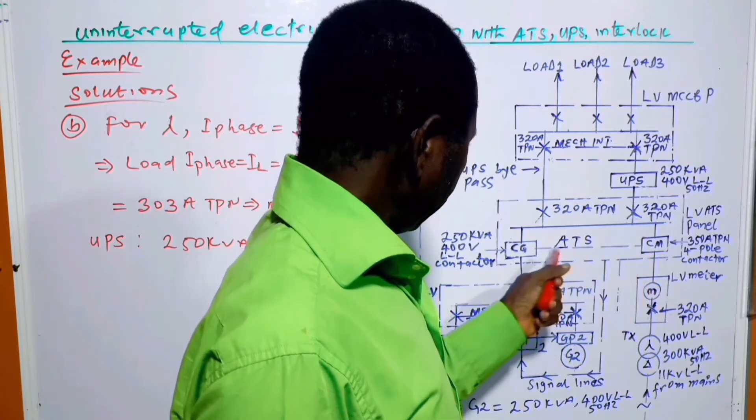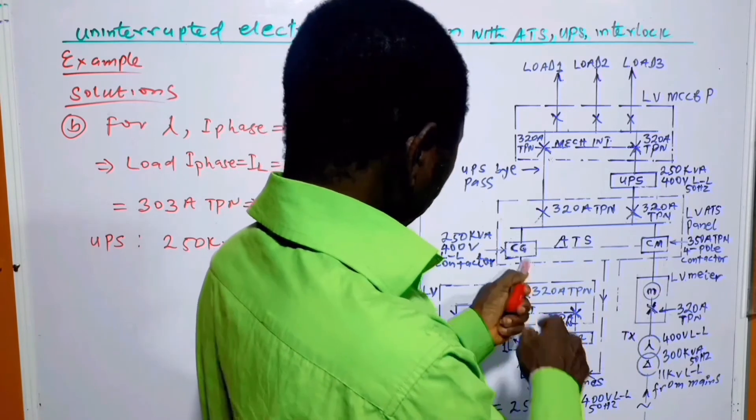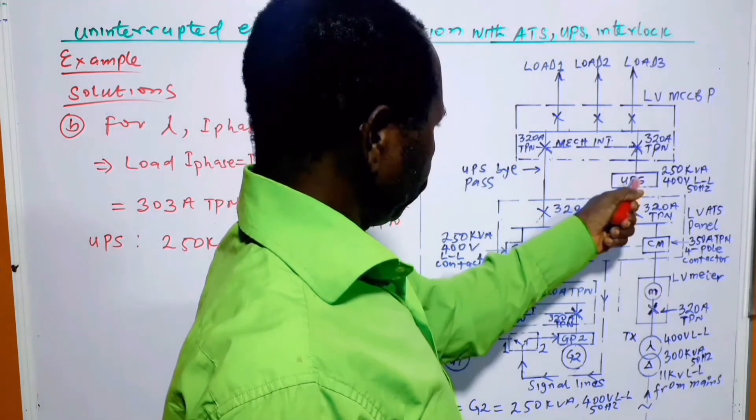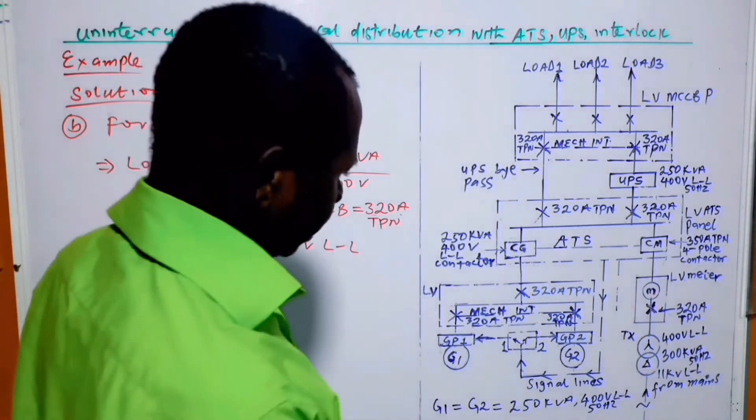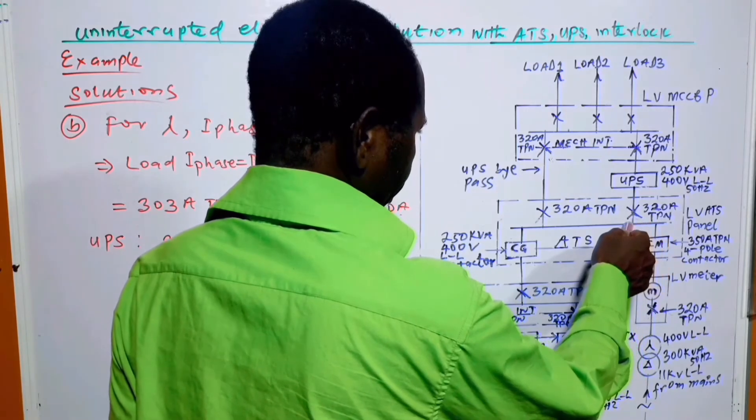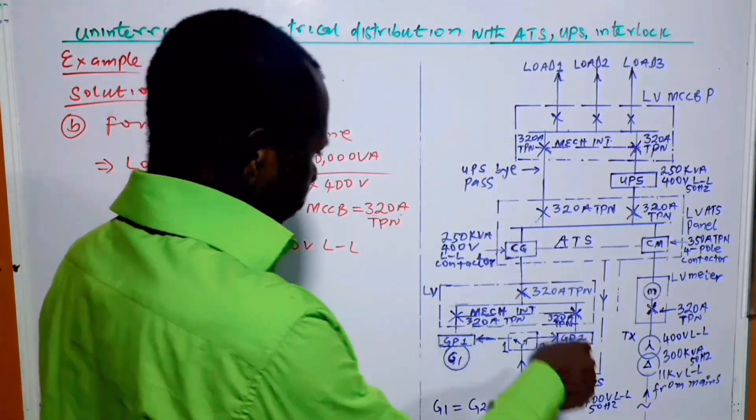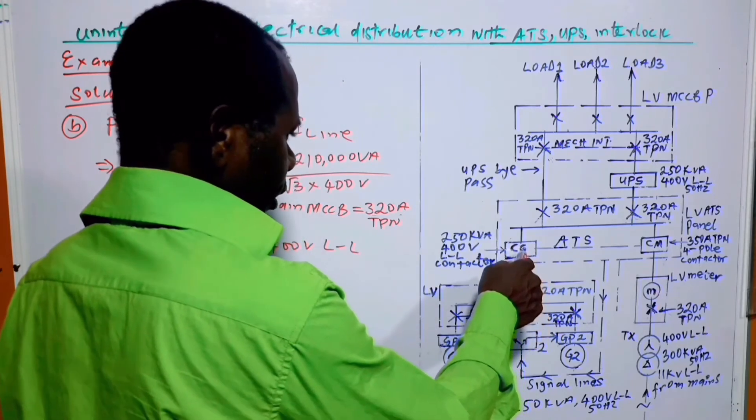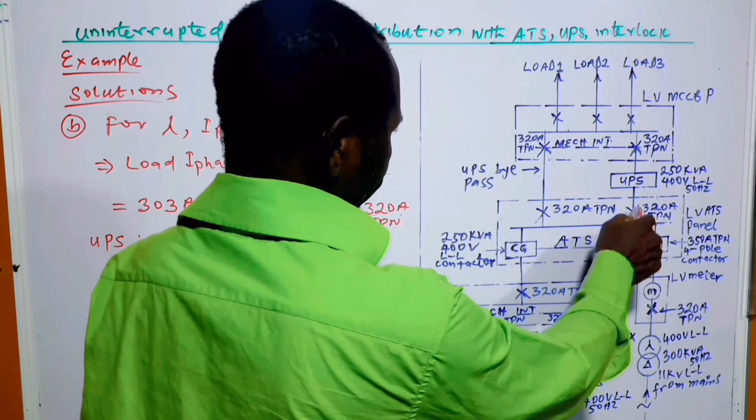From here, if the mains has failure, the generator output continues to be here. From here, it will come and enter the UPS. From the UPS to the load panel. Actually, the flow of power for the two sides is like this. From here, through the meter, that is the mains, through this contactor, through this bus section, to the UPS, to this circuit breaker, and to this load bus section. Even for the generator also, the output of the generator comes here, it goes into the contactor for the generator, and the power is delivered to this common bus section. From here, it goes through the UPS as well.